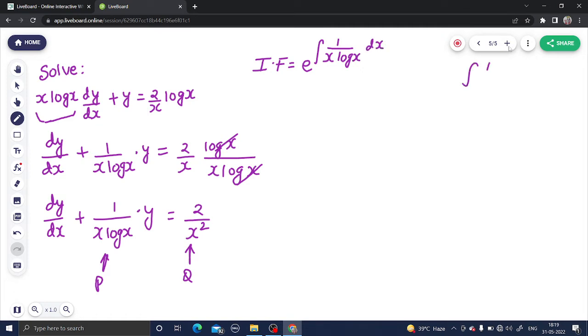In this question, this integral if you solve separately, you can take log x as t. So you get 1 upon x dx as dt. So dx by x is dt.